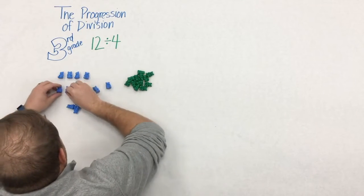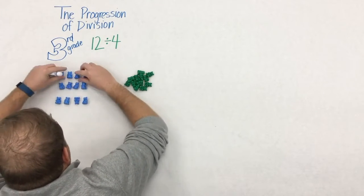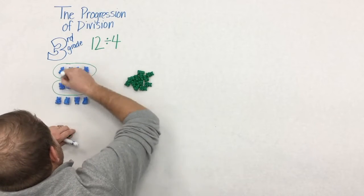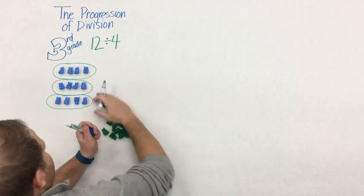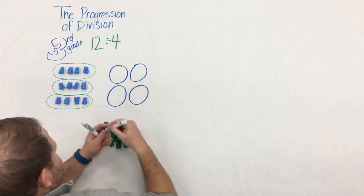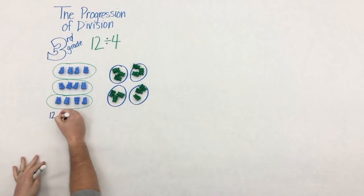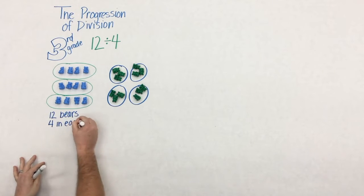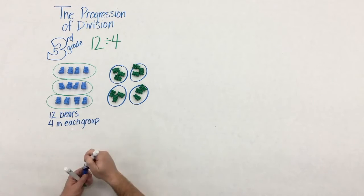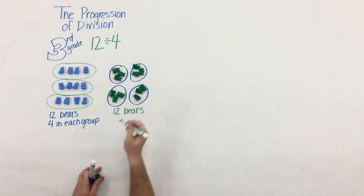So take this for example, 12 divided by 4. Let's see what happens. Well, we have two completely different models. And what this says is that the context, the story of the problem, plays a large part in developing students' conceptual understanding.